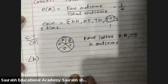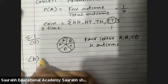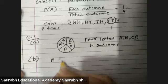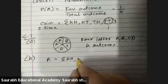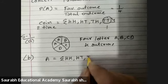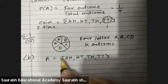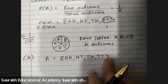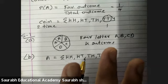Now in the second case, if you toss two coins together, the outcomes will be HH, HT, TH, TT. Total four possible outcomes.